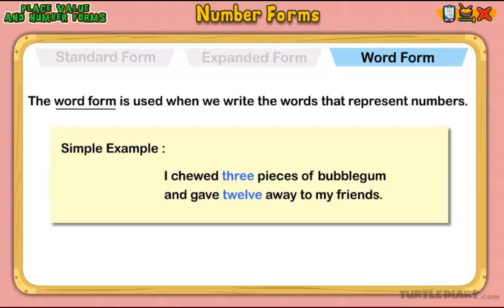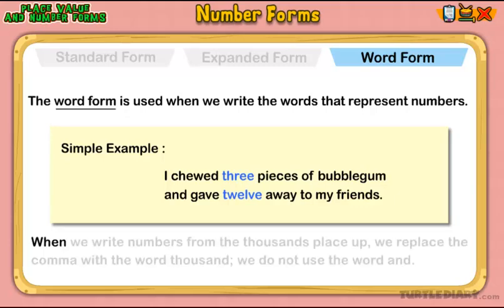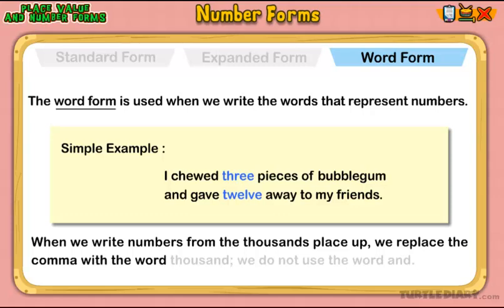Here is another example using larger numbers. When we write numbers from the thousands place up, we replace the comma with the word thousand. We do not use the word and.